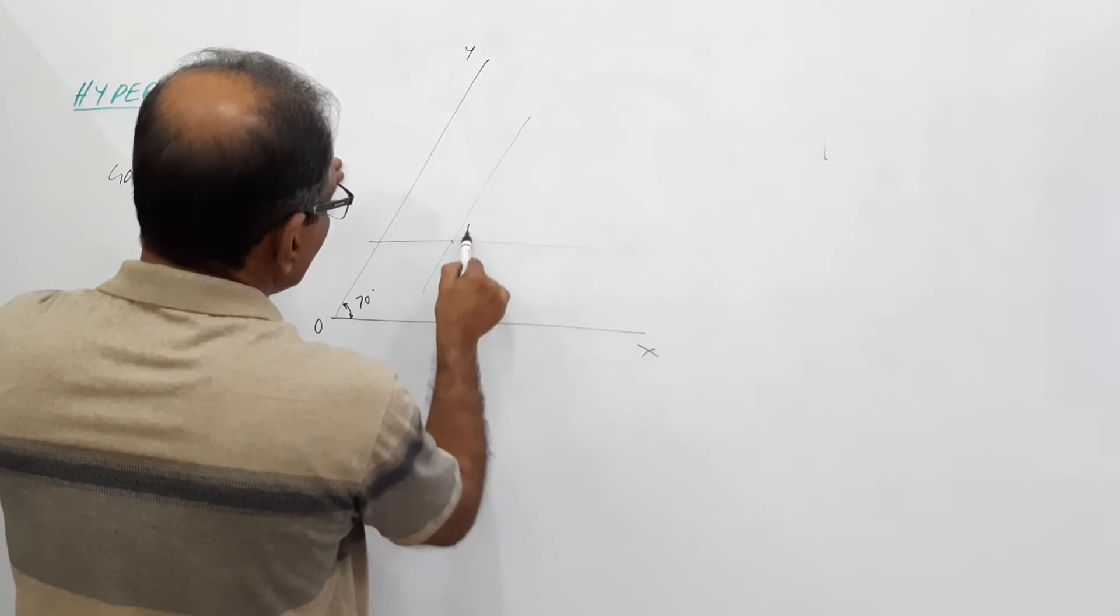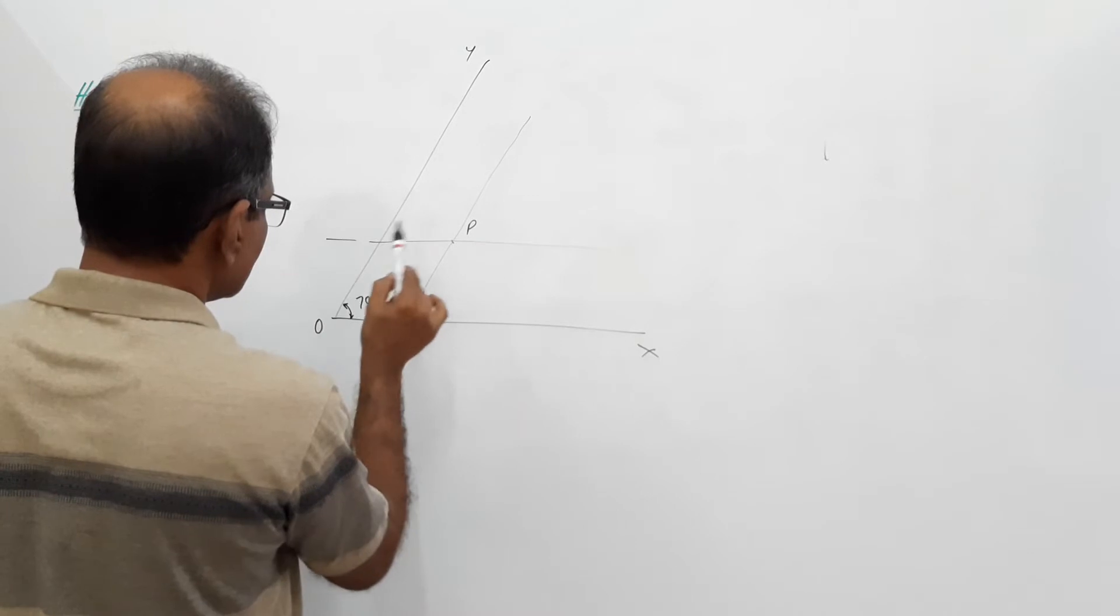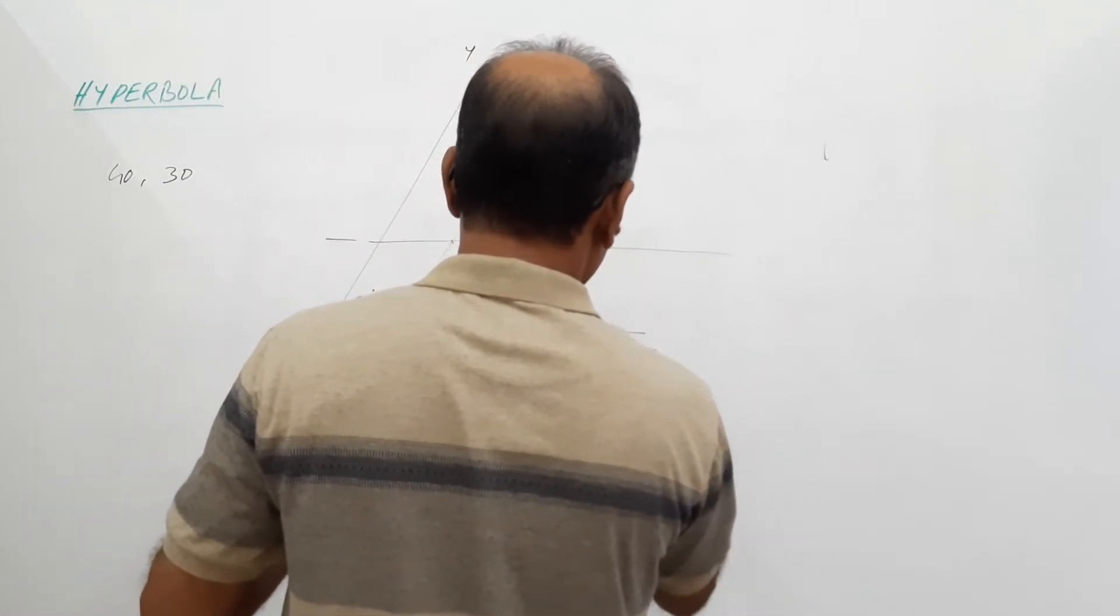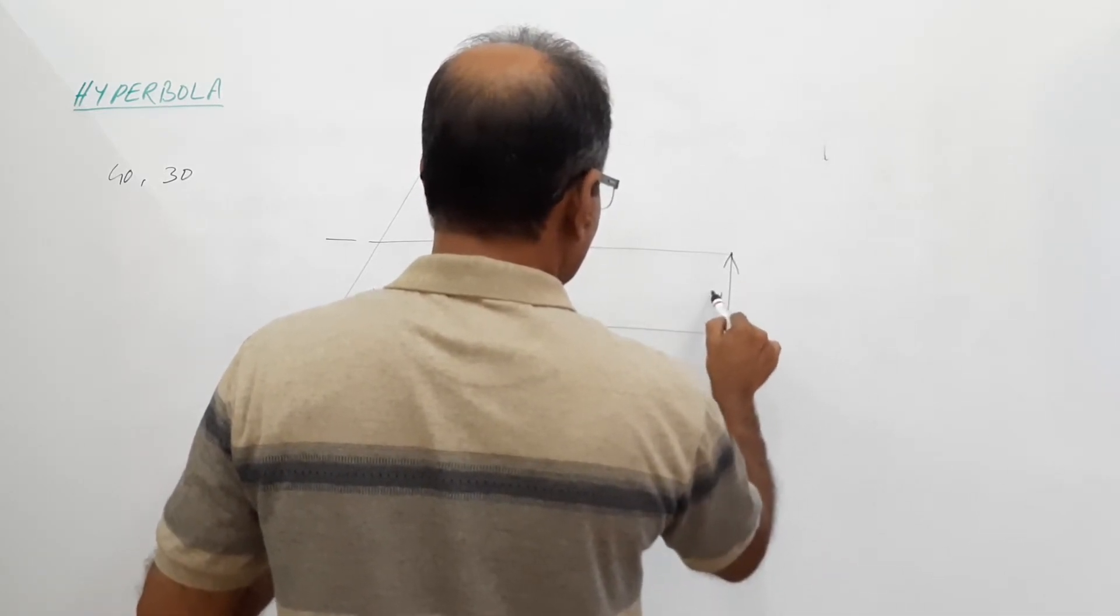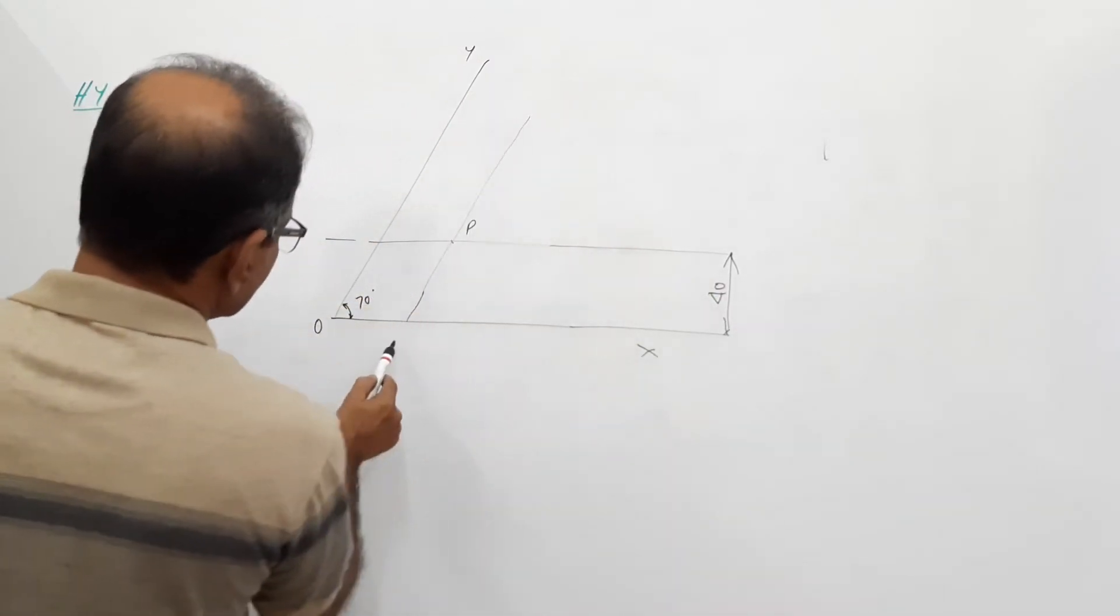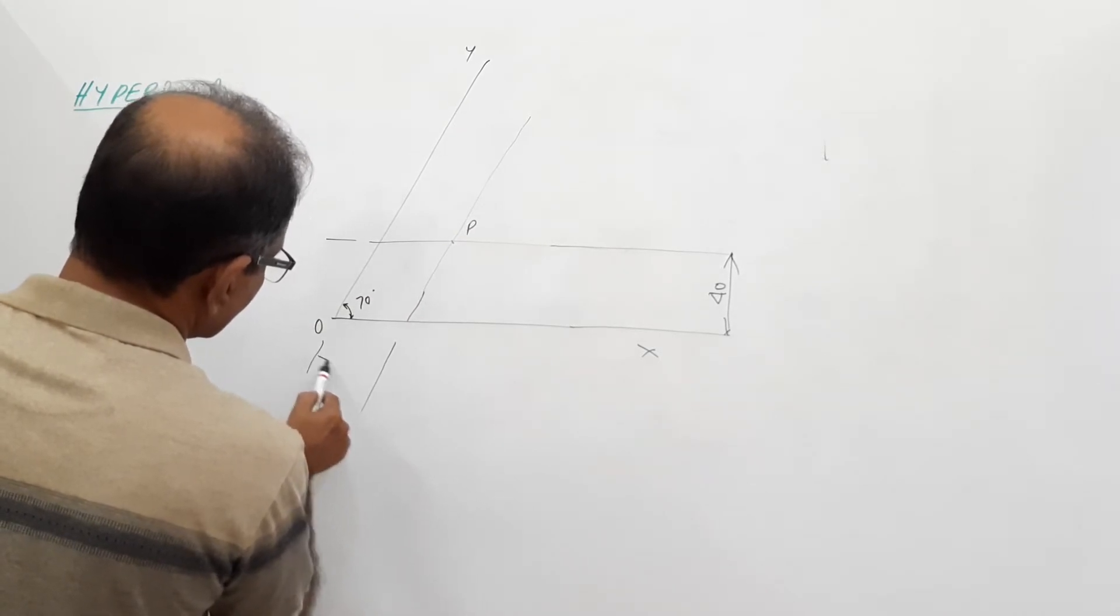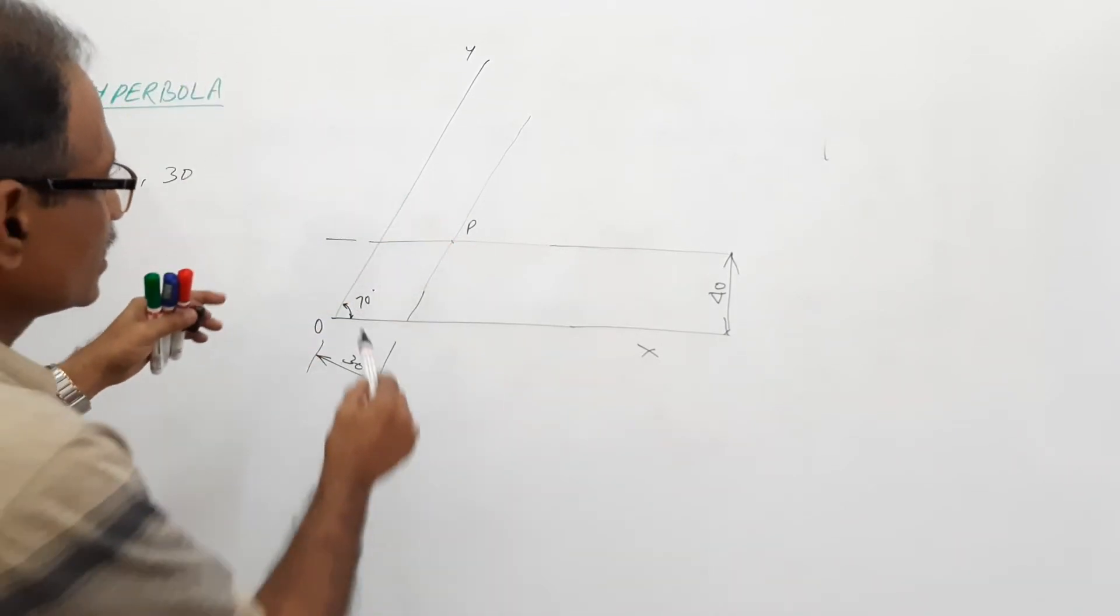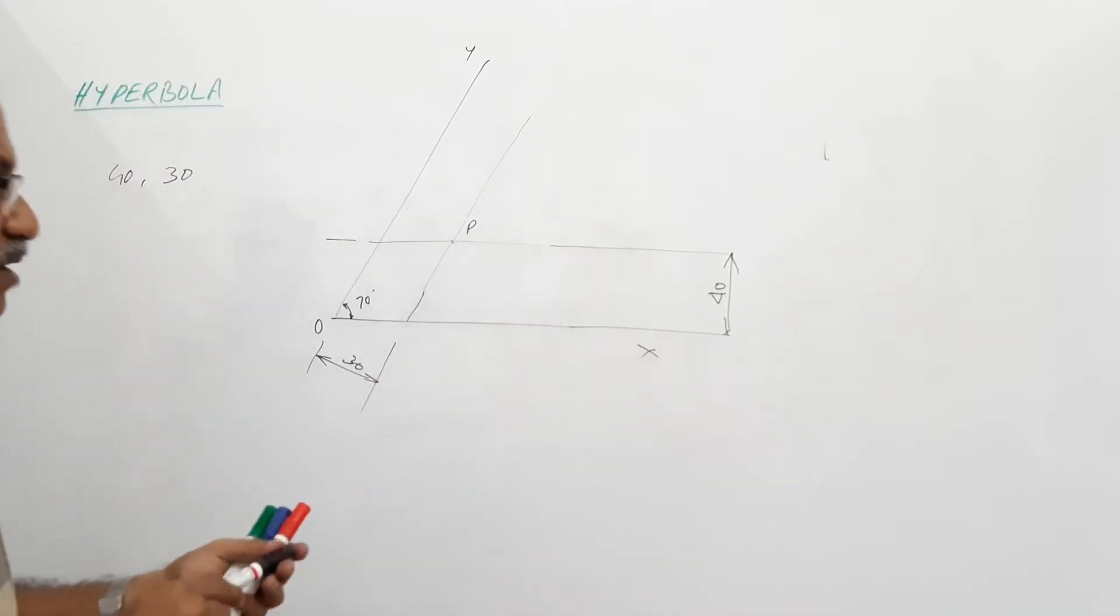This is P. This distance is 40, and this distance is 30. It is a minimum distance. This is more than 30, but the minimum distance is 30. So that is how you take the distances - minimum distance, parallel to that.